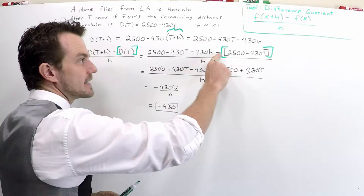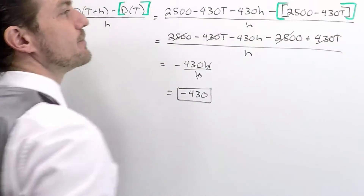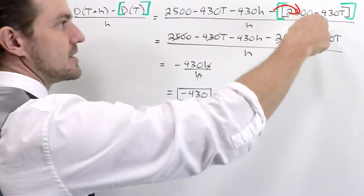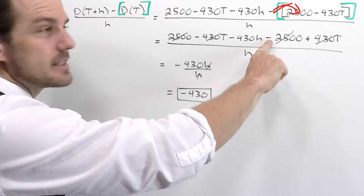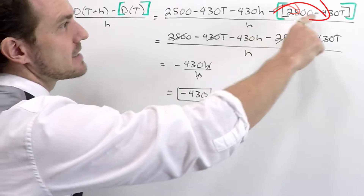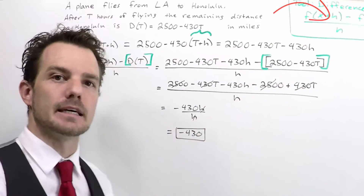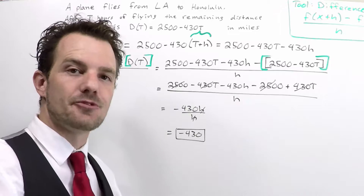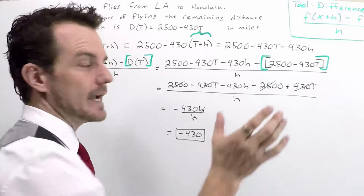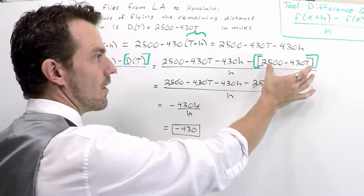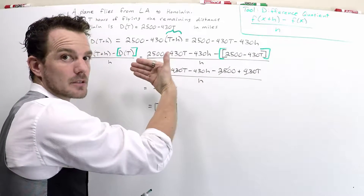So we put brackets here to make sure that the minus sign subtracts each component. The negative can then hit each component of the original as we let it distribute, which is where we get this negative. Negative and negative made this positive. It's very common for the difference quotient to cancel all the original parts with something prior.